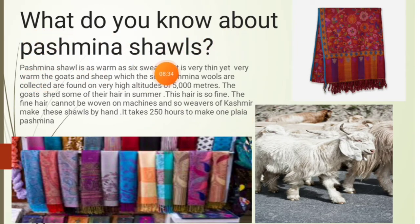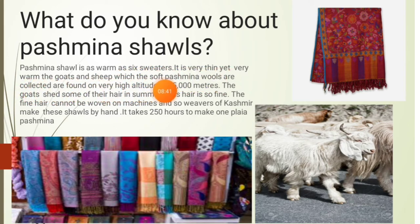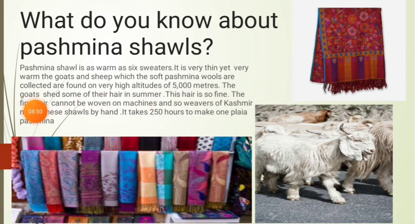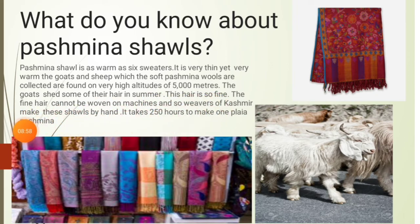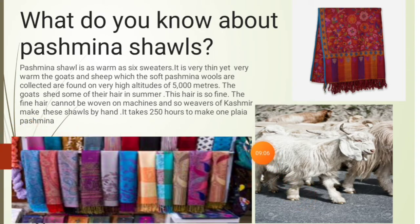What do you know about Pashmina shawl? The Pashmina shawl is as warm as six sweaters — it is very thin, yet very warm. The goats from which Pashmina wool is collected are found at very high altitudes of 5000 meters. The goats shed some of their hair in summer. This hair is so fine that it cannot be woven on machines. So weavers of Kashmir make these shawls by hand. It takes around 50 hours to make one Pashmina shawl. This is the picture of a Pashmina goat.